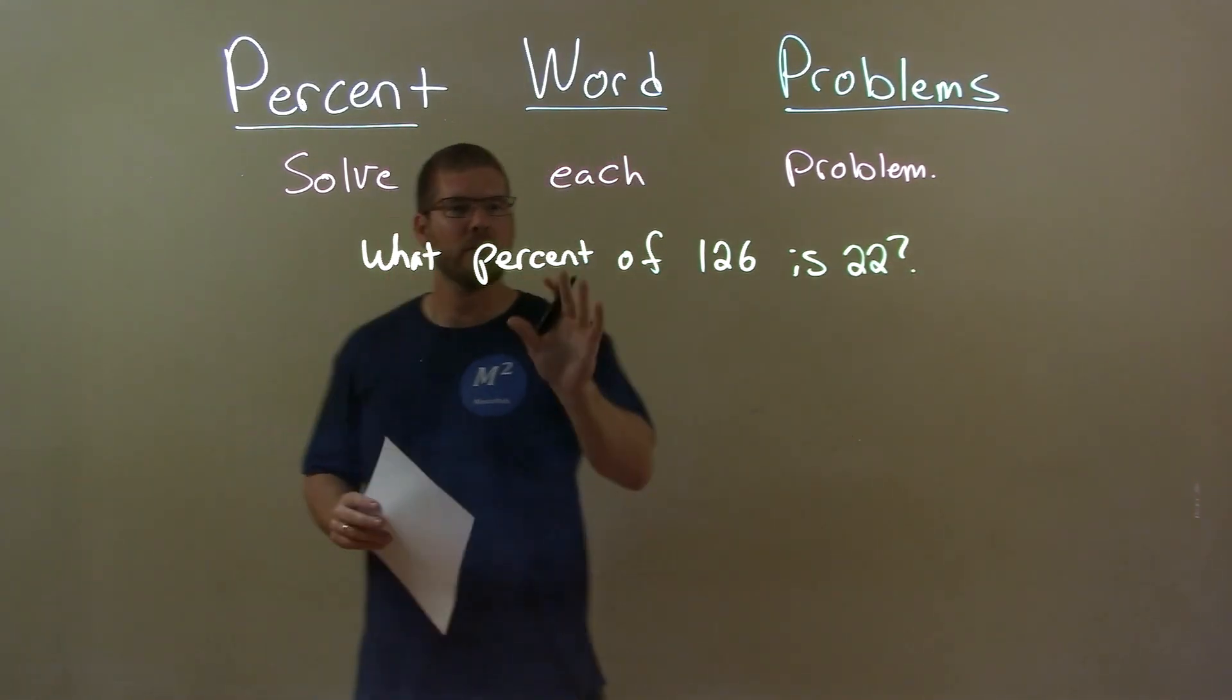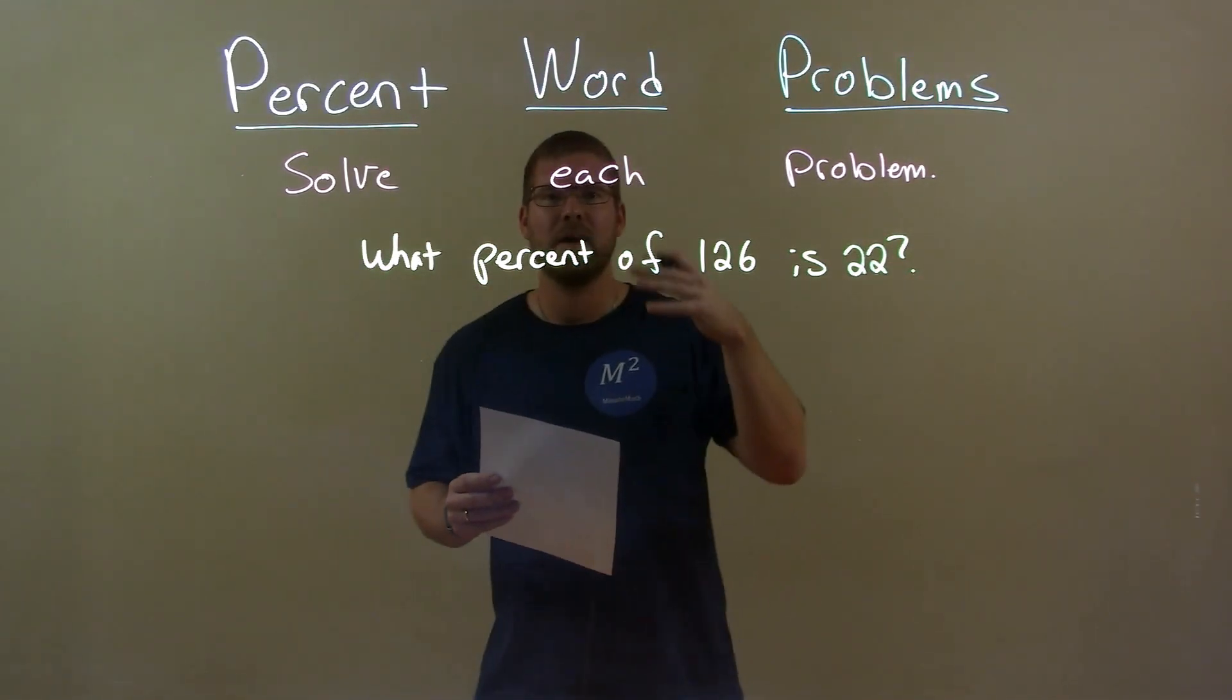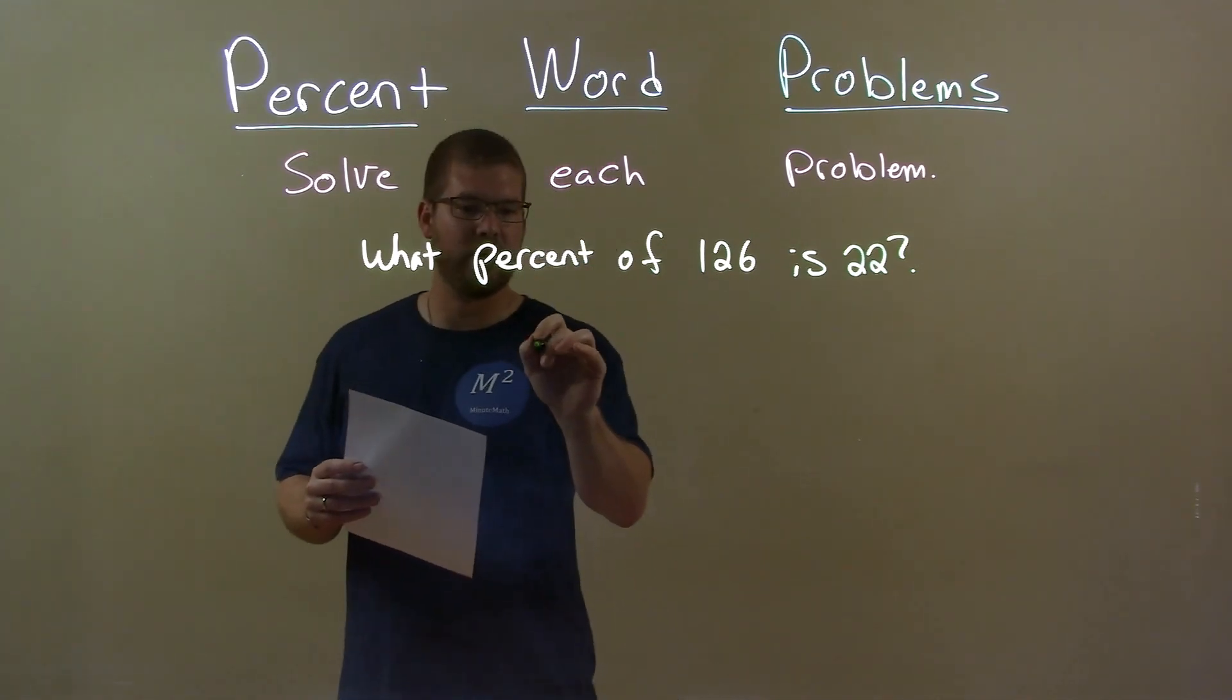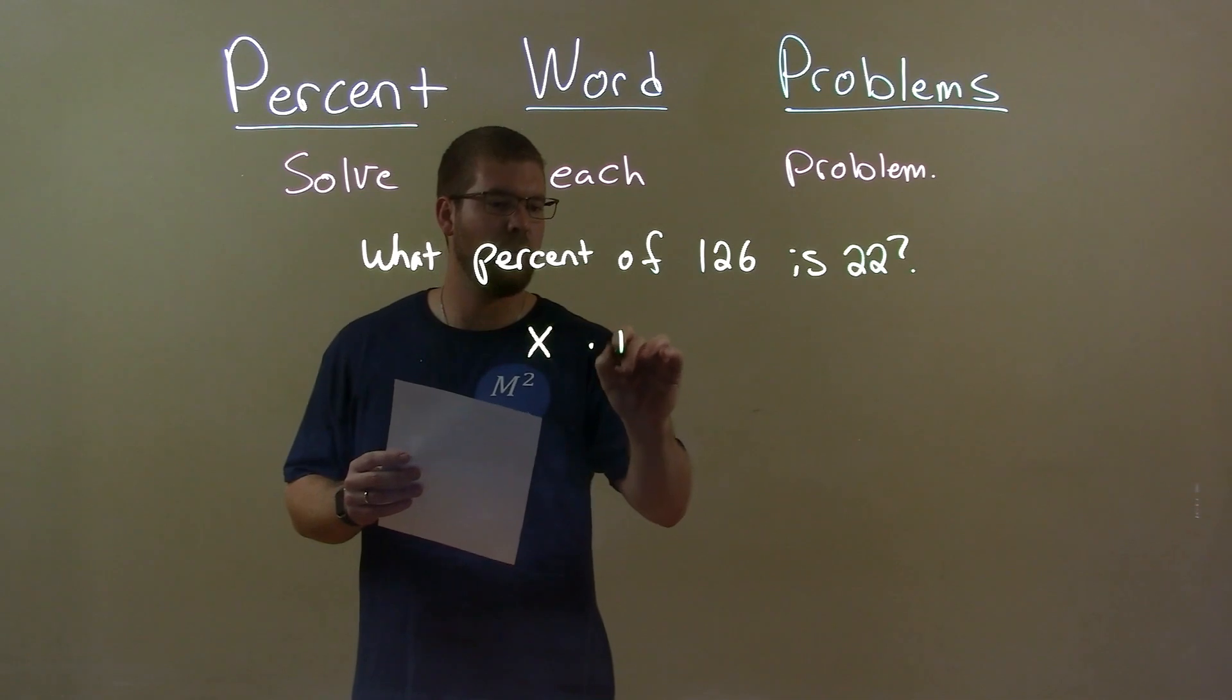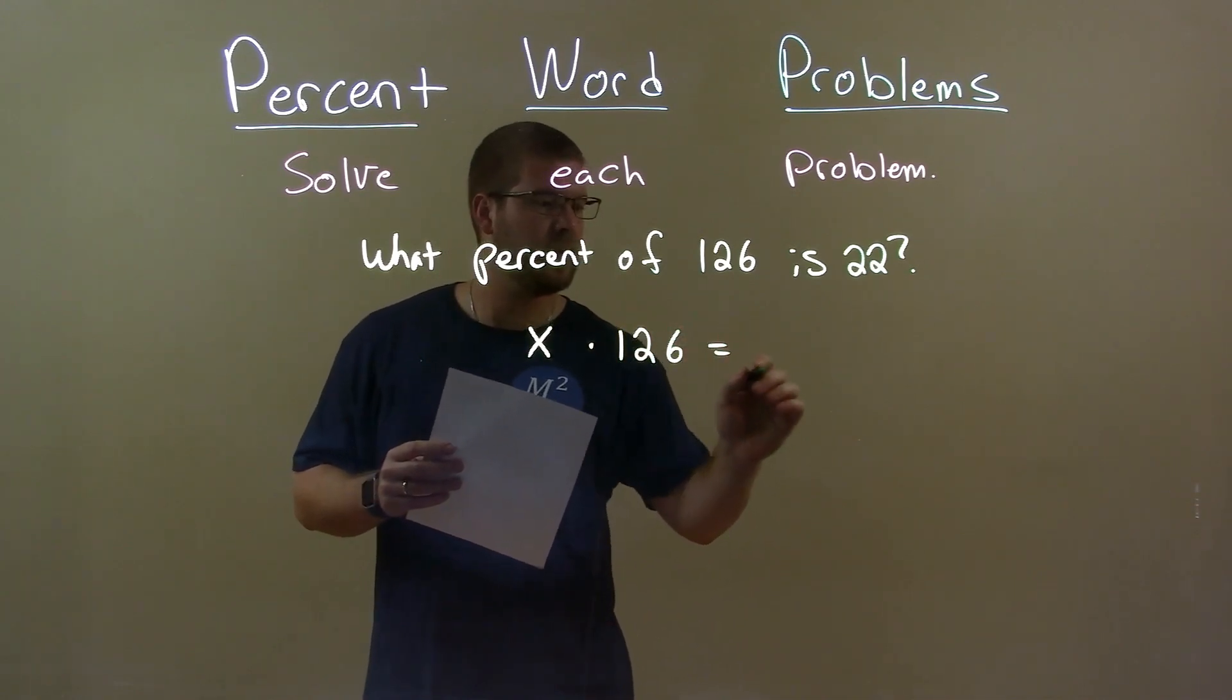I always like to convert this into an equation. What percent—variable x—what percent of, multiplication, 126 is 22.